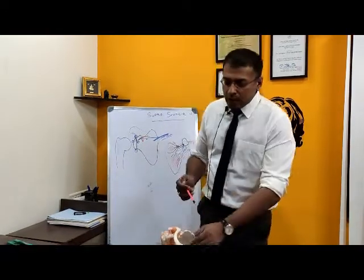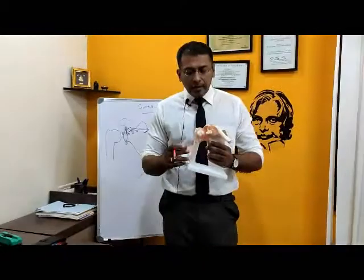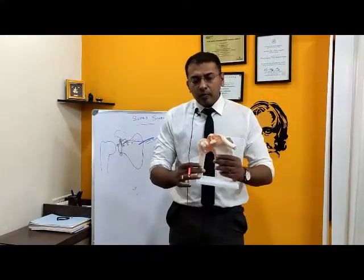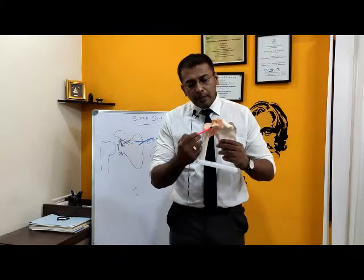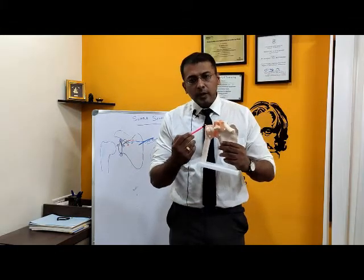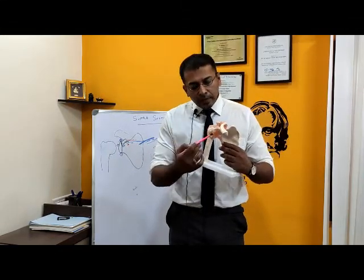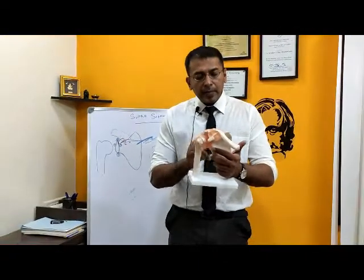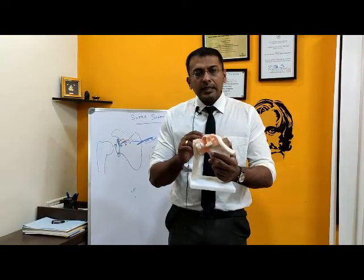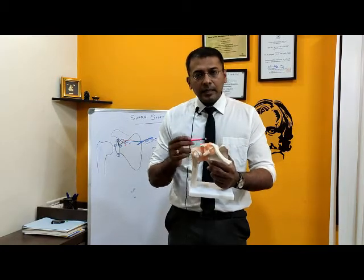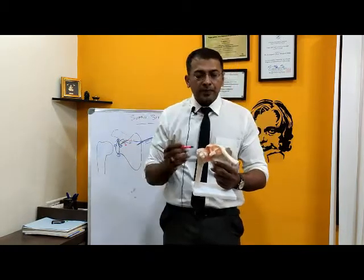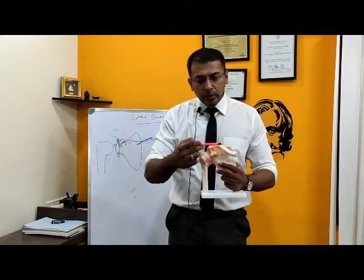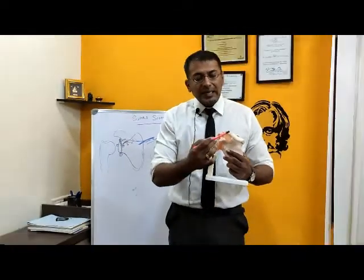The shoulder is basically a ball-and-socket joint. We have a bone called the humerus bone, and the upper part of the humerus forms a ball. This ball sits inside a socket. The socket is part of a bigger bone called the scapula or the shoulder blade, which sits behind the shoulder, and this is also connected to the collarbone or the clavicle.